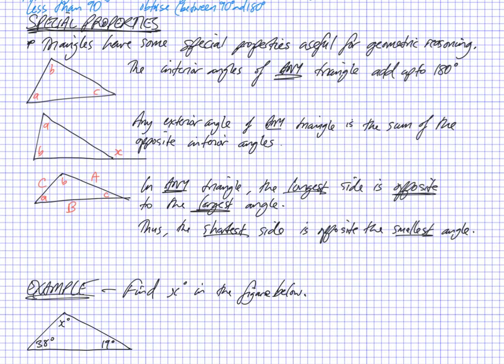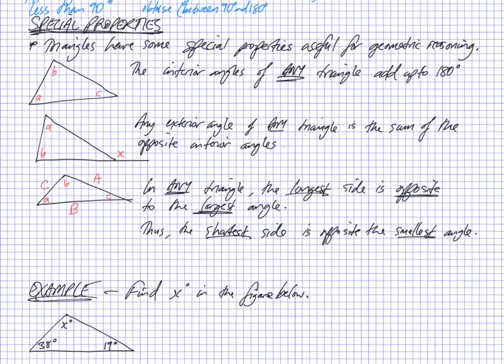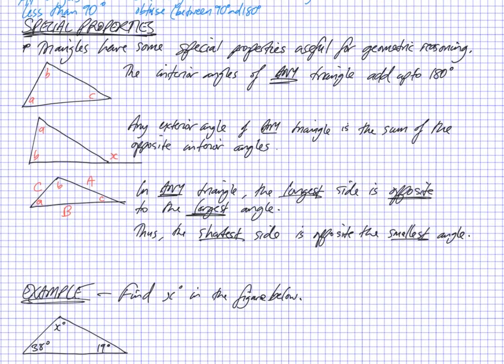Now, triangles have some special properties that we use when doing geometric reasoning. The first is that all of the angles add up to 180 degrees. So in this particular triangle here, if I added angle A to angle B to angle C, I know that the answer is going to be 180 degrees.